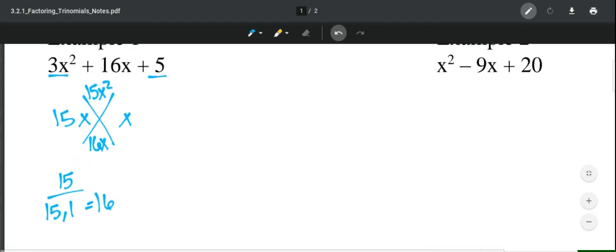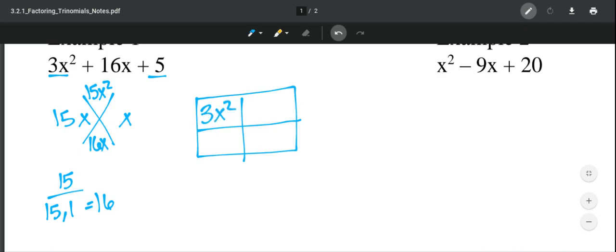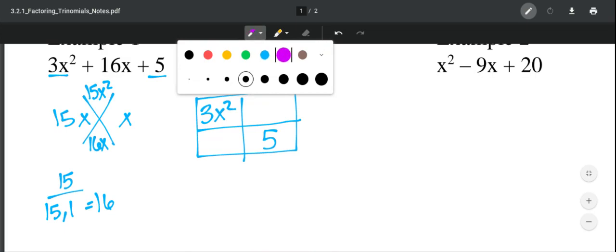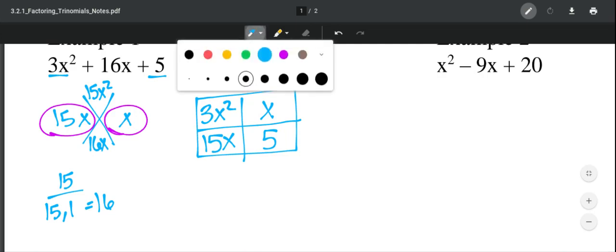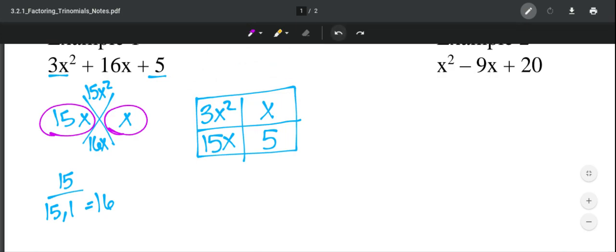So now comes the box. You are going to put the first term in one box. Kitty corner, you're going to put the last term. Now the two that you just found, this one and this one, you are going to put in the other two boxes. It does not matter which way. Now, we are going to do GCF, just like you did before. So you are going to first look at the rows. So 3x² and x, they both have an x. 15x and 5, they both have a 5.